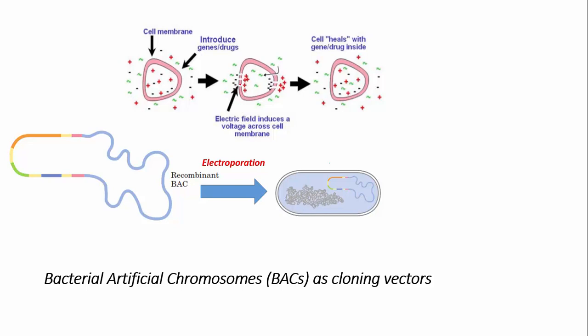The DNA is then taken up by the bacterial cells, and when we remove the electric field pulse, the bacterial cell membrane pores become closed. Our recombinant BAC has now been introduced into the bacterial cells.